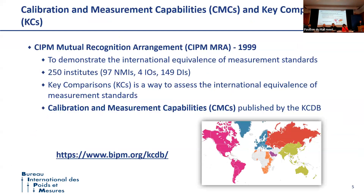The framework under which international equivalence of measurement standards is demonstrated is the CIPM Mutual Recognition Arrangement, the CIPM MRA, signed in 1999. It gathered today 250 institutes, and key comparison is one of the most straightforward ways to assess this international equivalence. The BIPM maintains a database in which we publish calibration and measurement capabilities, the CMCs, which allow a laboratory to demonstrate its capability to realize the becquerel for a given medium and a given range of activity.